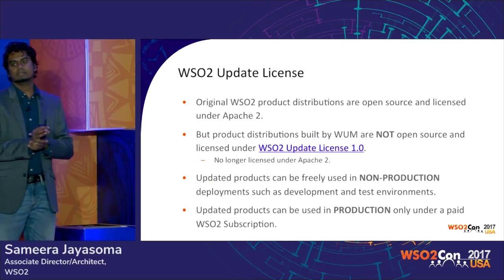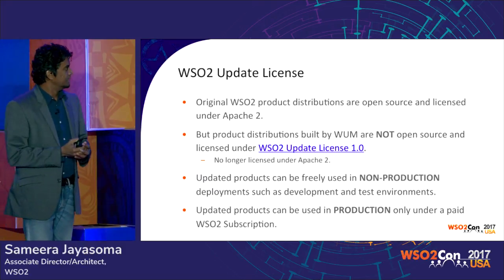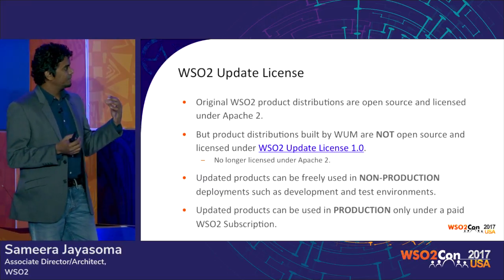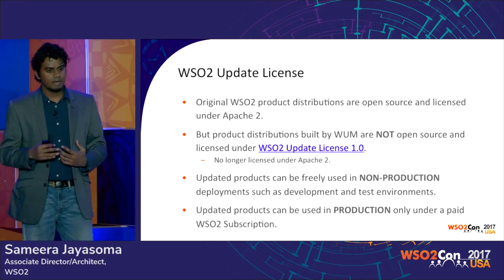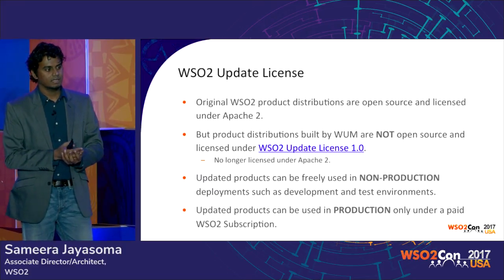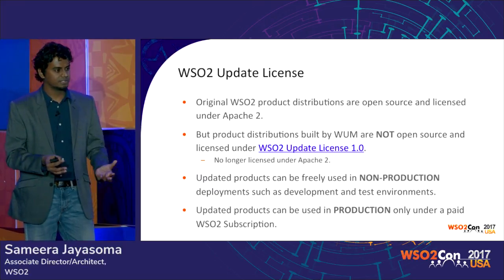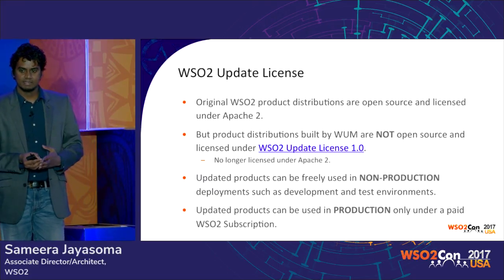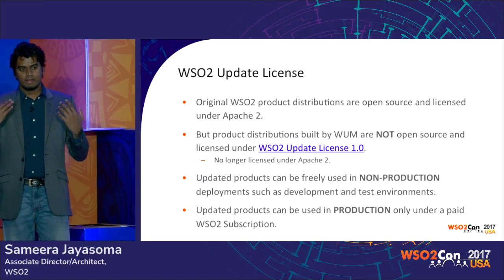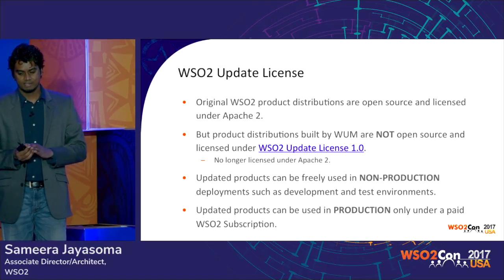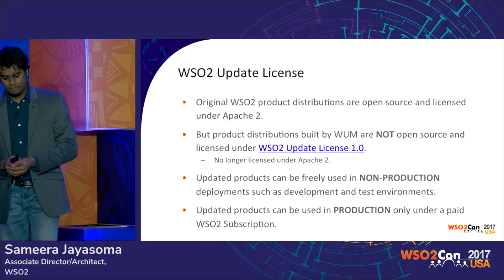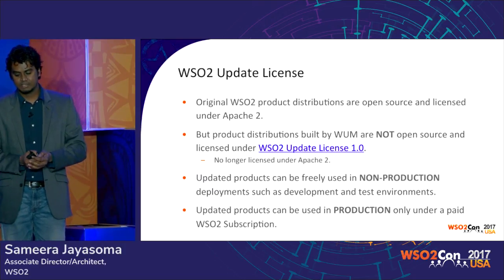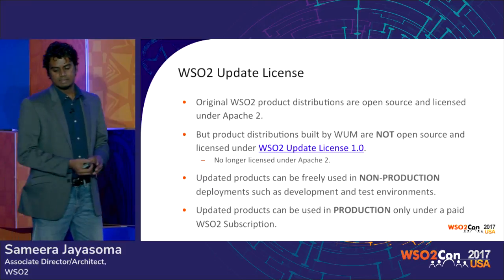Let's look at the licensing effect. Whenever we release a product archive, those products are open source and licensed under Apache 2, so you can do anything with them — you can go to production without paying us because it's free and open source. But when you use WAM to get updates, we give you non-open-source code. That is the only difference. When you use WAM to update our products, the resulting new update distribution is not open source and not licensed under Apache 2.